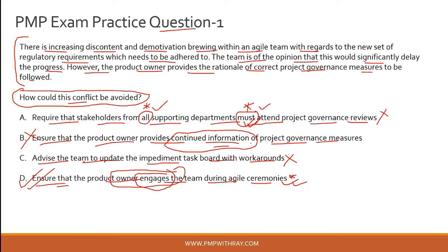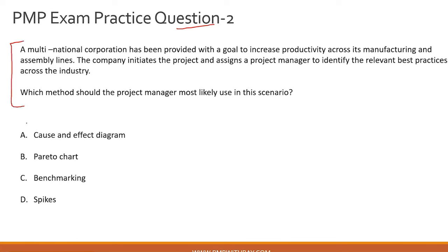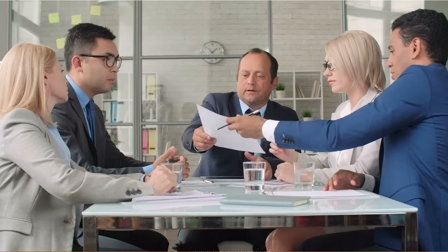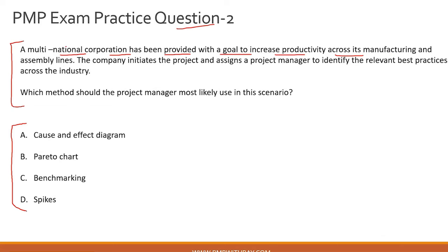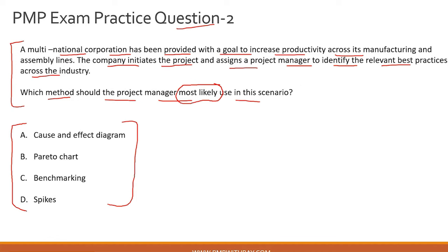Question number two: a multinational corporation has been given a goal to increase productivity across its manufacturing assembly lines. The company initiates a project and assigns a project manager to identify relevant best practices across the industry. Which method should the project manager most likely use? Remember the phrase 'most likely' — you are looking for the best possible answer. The goal is to identify best practices for improving productivity across manufacturing and assembly lines.